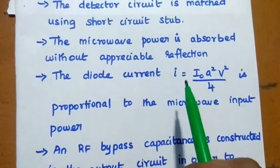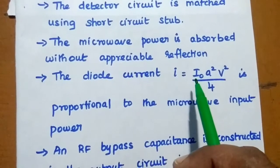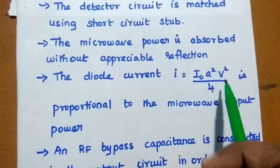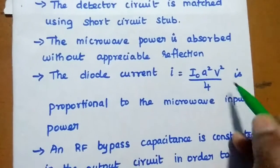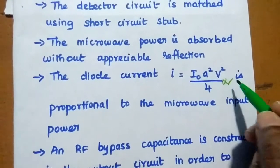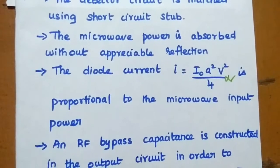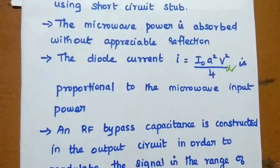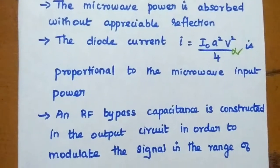The diode current is represented as I equals I0 A squared V squared by 4. So this is proportional to the microwave input power. By that way we can get or we can detect the microwave signal.